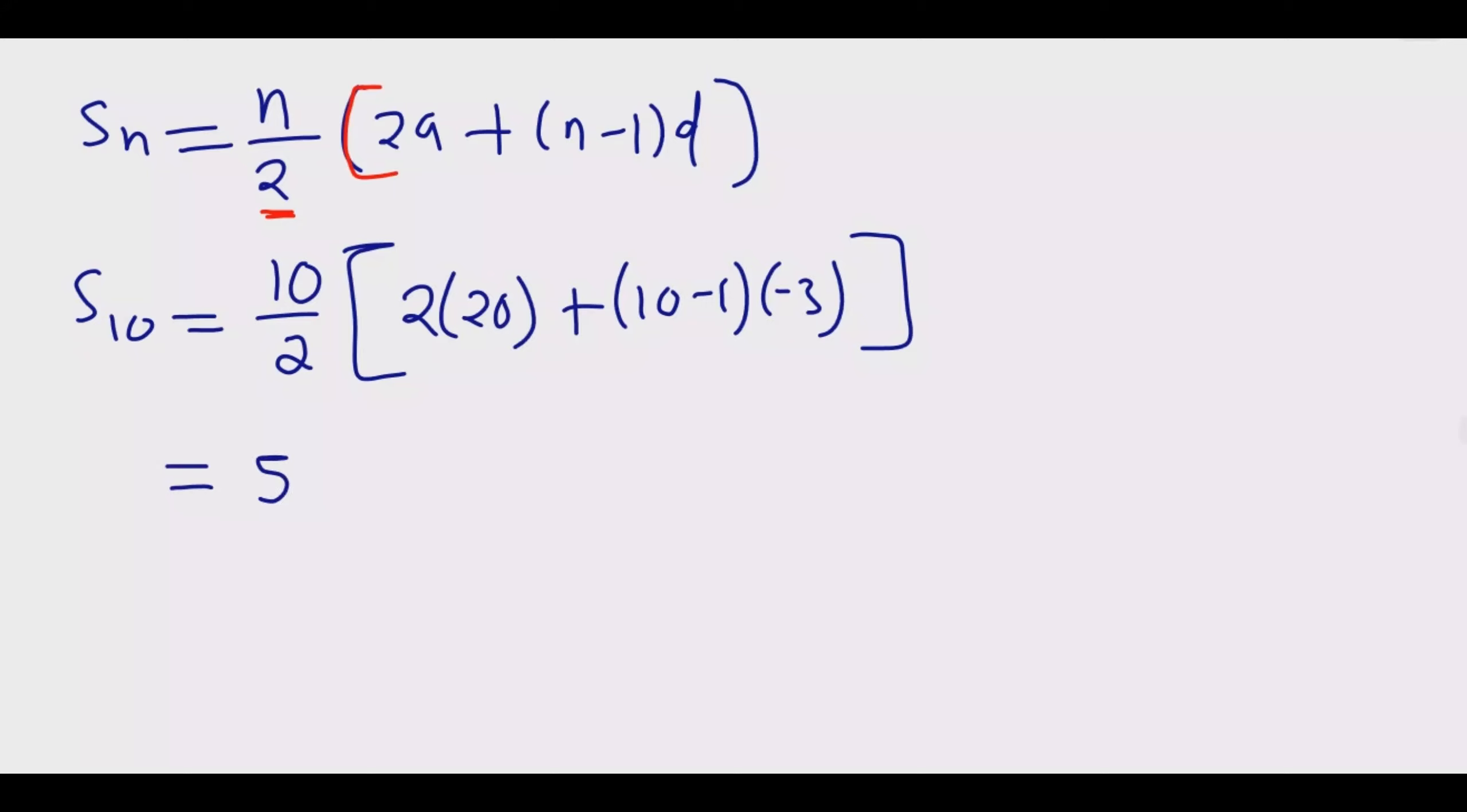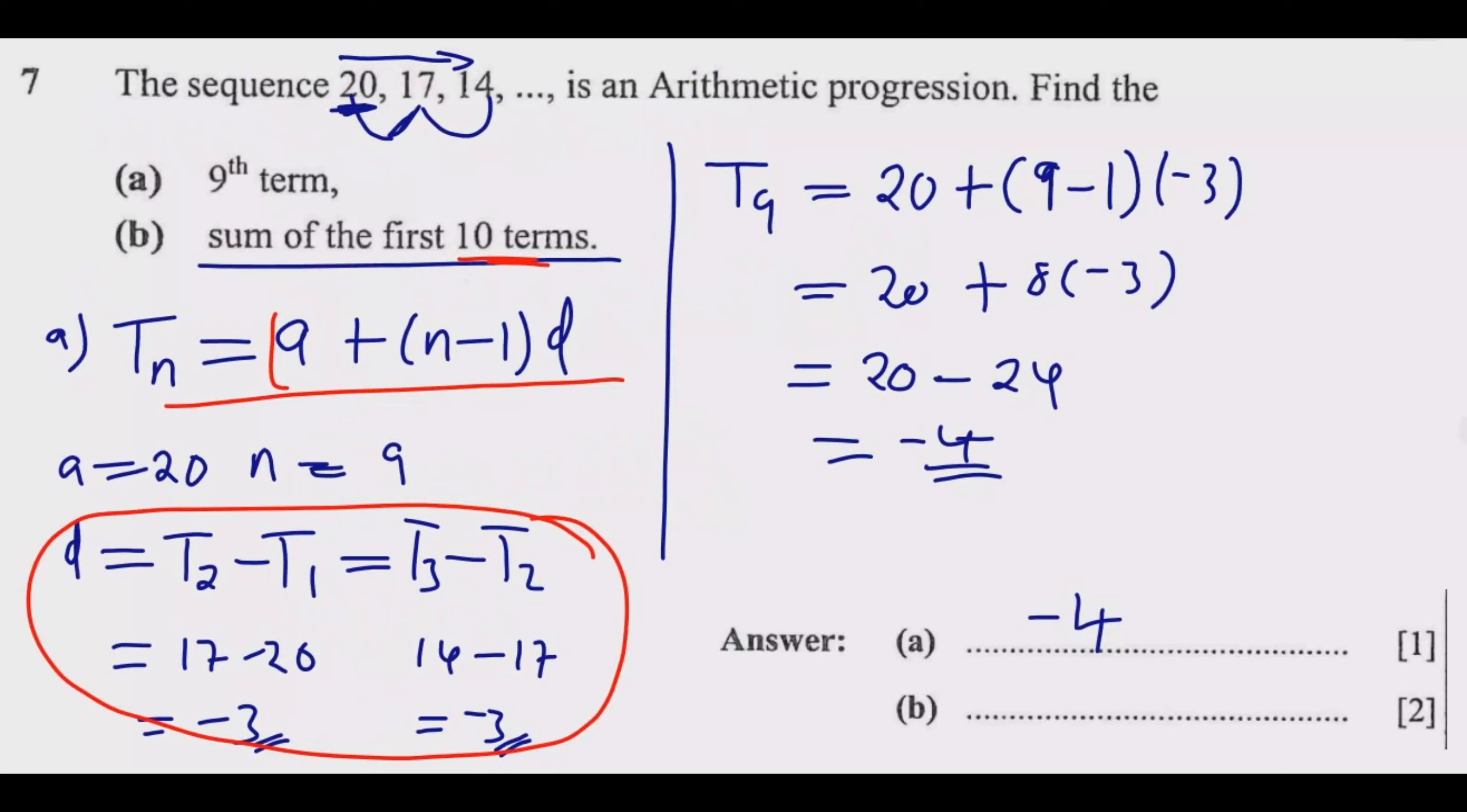So 10 divided by 2 is 5, then 2 times 20 is 40, then we have 10 minus 1 which is 9, times negative 3 is negative 27. Then at this point we just simplify this. The answer is 65. Once you do this you're good to go, you get these two marks.